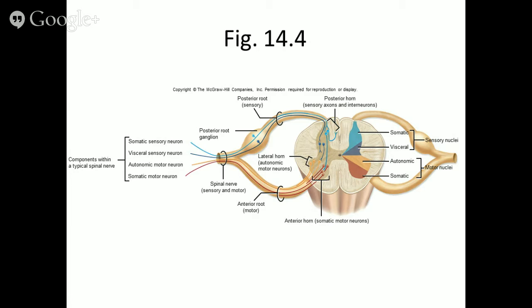Have you ever noticed that if you touch something and you burn yourself, or you stick yourself, you didn't realize what occurred until after the action? That's because the second neuron was too busy synapsing on an interneuron and sending the signal up an ascending track to your brain so your brain could consciously process that incoming information. Meanwhile, the first neuron already synapsed on somatic motor neurons and sent a motor command out through the spinal nerve to create a reflex. Amazing, but true.